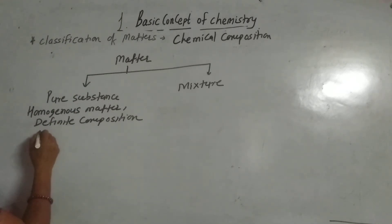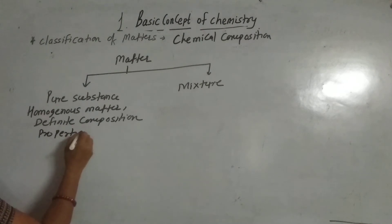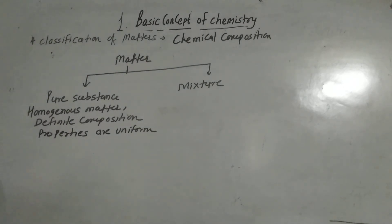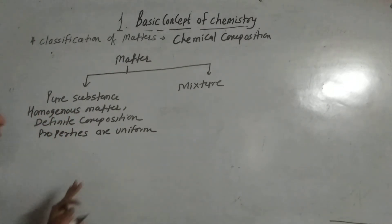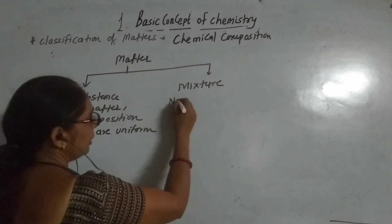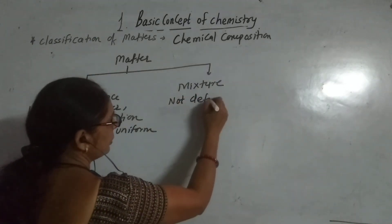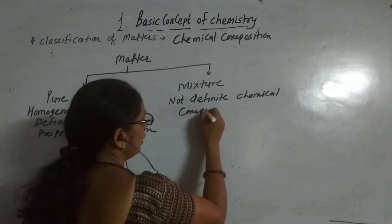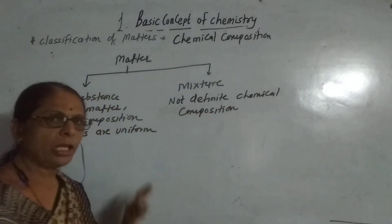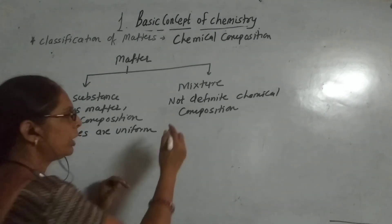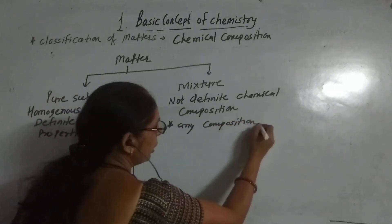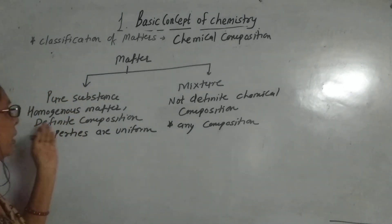Their properties are uniform. So these are the things to consider about pure substances: they are homogeneous matter, they have definite composition, and their properties are uniform. For mixtures, they do not have a definite chemical composition — the two or more elements in a mixture can combine in any composition. They do not have any definite chemical composition.